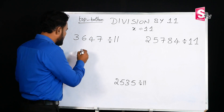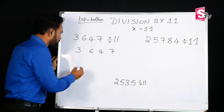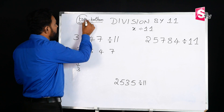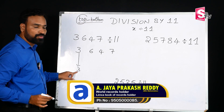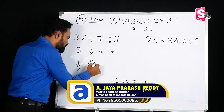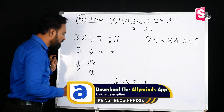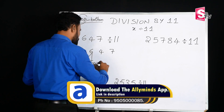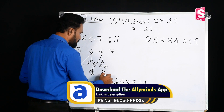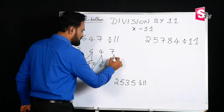3647 divided by 11. First, we have the number 3647. Drop 3 first. We have number 36. Next, subtract to get the digits. So, 7 minus 1.